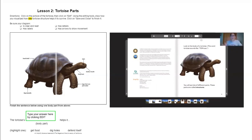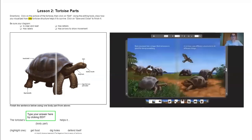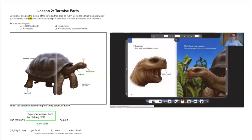Let's keep on reading about tortoise parts. Each structure has a shape. Each structure is good for doing something. A tortoise uses different structures to do different things. Structure: A tortoise has a beaky mouth. What the structure can do: The beaky mouth is good for biting leaves.